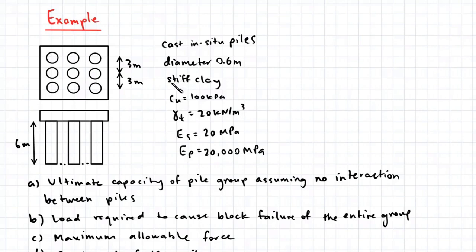The piles have been driven into stiff clay and the soil has an undrained cohesion of 100 kPa, a unit weight of 20 kN per meter cubed, a soil modulus of 20 MPa, and the piles have a modulus of 20,000 MPa.